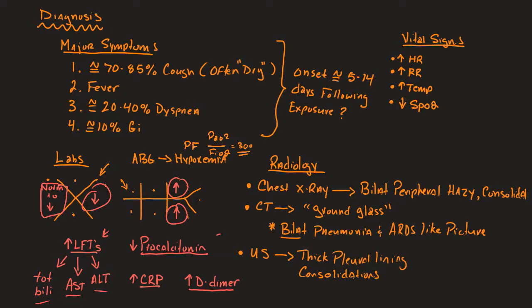A big one that we run into is procalcitonin, and this might help us differentiate bacterial from viral issue. Typically, in COVID-19 patients, they can have normal to even low procalcitonin levels. That is not characteristically seen in other kinds of pneumonias. Often, the procalcitonin level may be elevated with bacterial pneumonia.